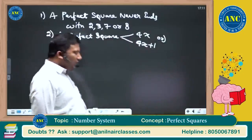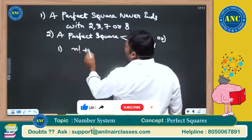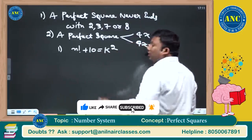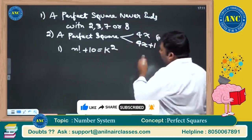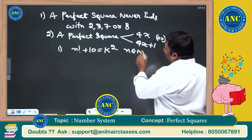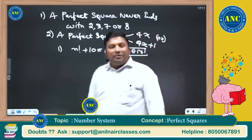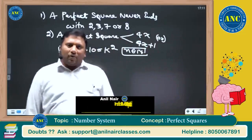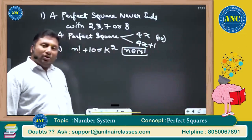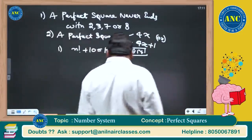First question: n factorial plus 10 is equivalent to k squared. How many natural number values will n take which will satisfy the equation n factorial plus 10 equivalent to k square?